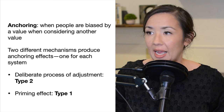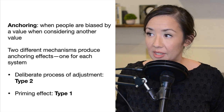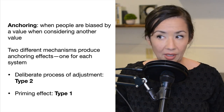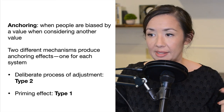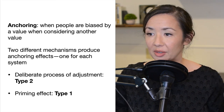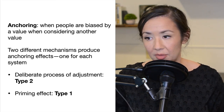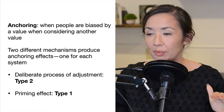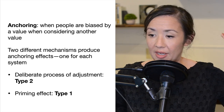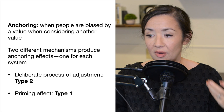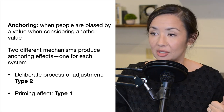Summary: Anchoring is when people are biased by a value when considering another value. There are two different mechanisms that produce an anchoring effect, one for each system. System 2 involves the deliberate process of adjustment up or down, while System 1 involves the priming effect.